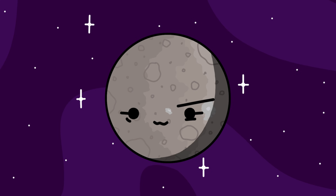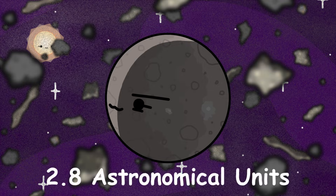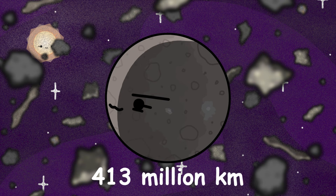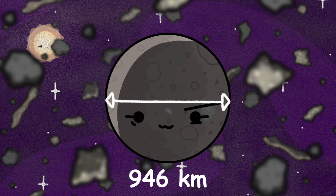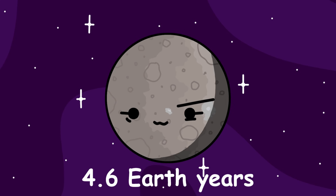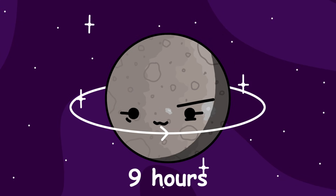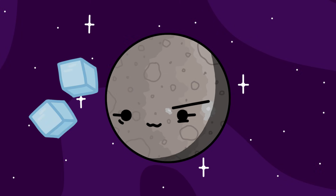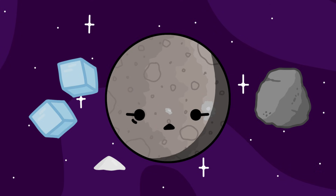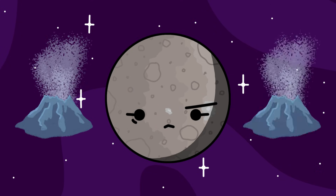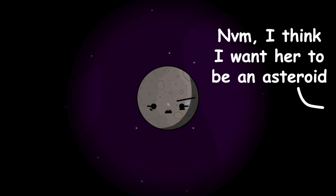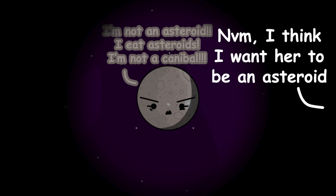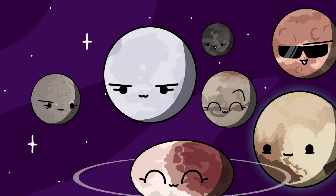Ceres. Ceres is the first dwarf planet from the Sun. It orbits in the asteroid belt with an average distance from the Sun of 2.8 AU or 413 million kilometers. Ceres is the largest and most massive object in the asteroid belt, making up about a third of the mass of the entire asteroid belt, with a diameter of just under 1,000 kilometers. It takes Ceres 4.6 years to orbit the Sun and 9 hours to complete a rotation. Ceres is thought to have cryovolcanoes and grows a new one every 50 million years on average. Ceres was thought to be a planet back in the 1800s when it was discovered, reclassified as an asteroid in 1851, and then reclassified again as a dwarf planet in 2006. Ceres doesn't have a moon.